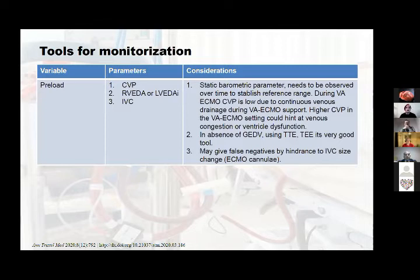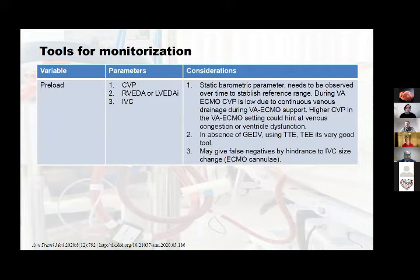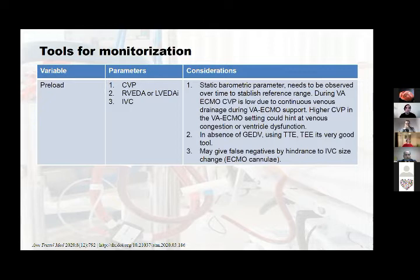In VA ECMO, CVP can be a good tool to predict right ventricular dysfunction. If you connect a patient with an initial CVP around 7 and the next hour it rises to 13, you need to assess right ventricular dysfunction and think about venous congestion. Right ventricular and left ventricular end-diastolic area are really good tools — remember that in cardiogenic shock, these parameters will initially be high, and with left ventricular recovery you will see them start going down.